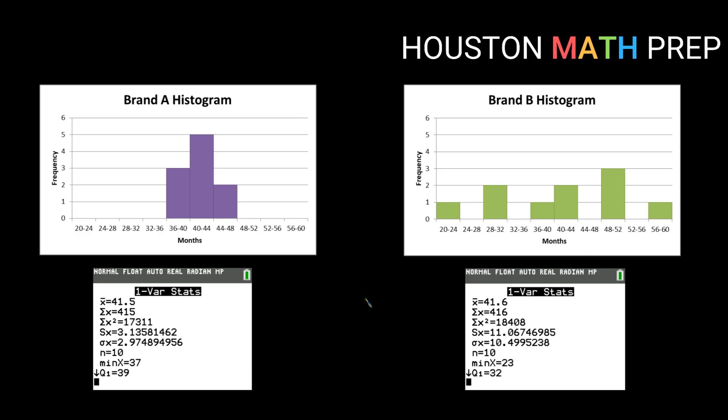So by creating a histogram I can see that brand A tends to seem to be kind of clumped together. All the data points seem to fall more close together. Brand B on the other hand has data points that kind of fall more spread out.